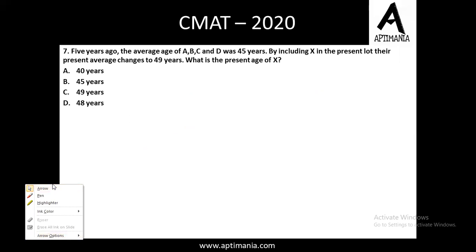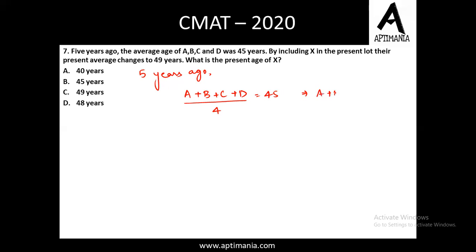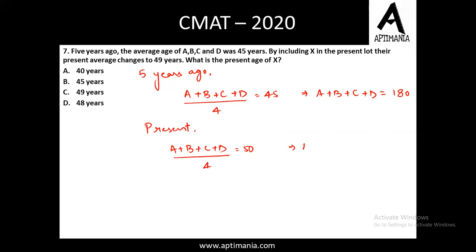Question number 7 is a question based on the concept of averages. Five years ago, the average age of A, B, C and D was 45 years. So A + B + C + D divided by 4 was 45, meaning their total age at that point was 45 × 4 = 180 years. In the present, their average age must have increased by 5 years to 50, so A + B + C + D in the present becomes 200 years.